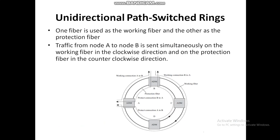This is a symmetric diagram of unidirectional path-switched ring. One fiber is used as working fiber and another one is used as protection fiber. Traffic from node A to node B is sent simultaneously on the working fiber in clockwise direction and on the protection fiber in anticlockwise direction.